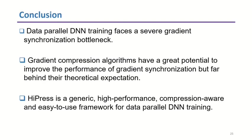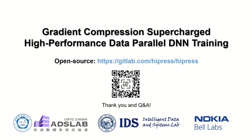To wrap up, in this talk we showed that data-parallel DNN training faces a severe gradient synchronization bottleneck. Gradient compression algorithms can help, but their practical speed-up is far behind theoretical expectation. To this end, we address the system challenges and build a generic, high-performance, compression-aware, and easy-to-use data-parallel framework named HAPRES. HAPRES has been open-sourced. Thanks for your attention.